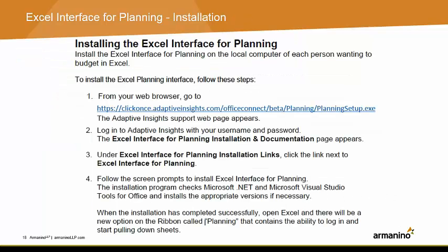Use of the tool requires installation on the local computer for each person. To do so, you will need to follow these steps. From your browser, go to the web address listed here. Log in with your Adaptive username and password. You will see the Excel Interface for Planning installation and documentation page appear. Under Excel Interface for Planning installation links, click the link next to Excel Interface for Planning. Follow the screen prompts to install, and when the installation has completed successfully, open Excel and there will be your new ribbon called Planning.